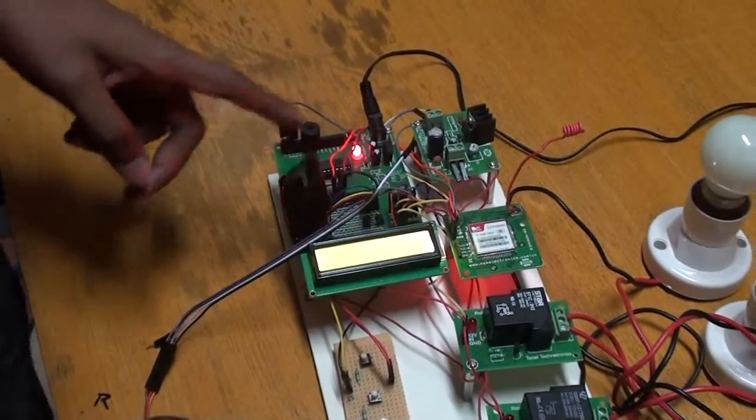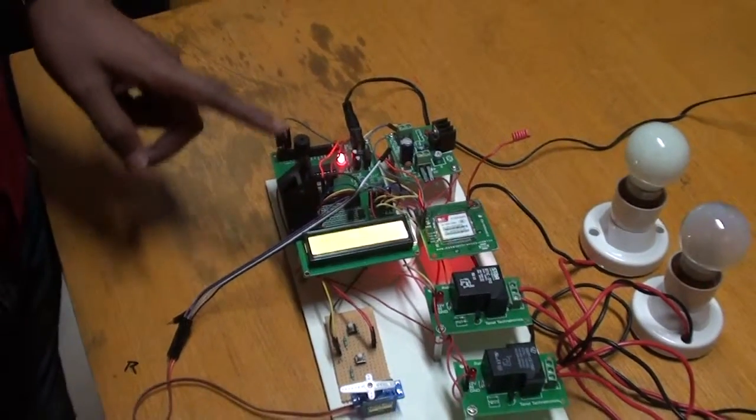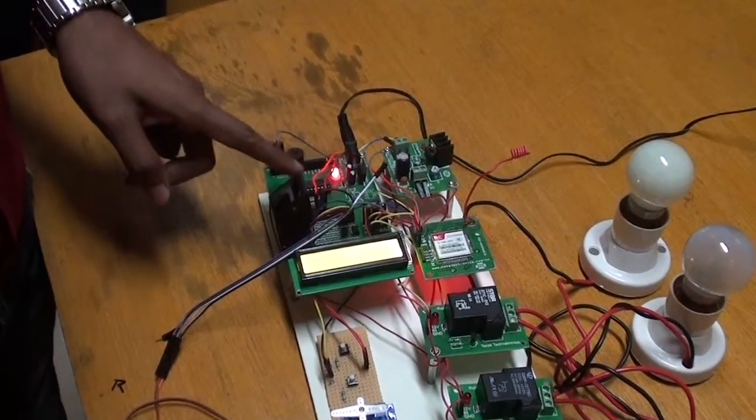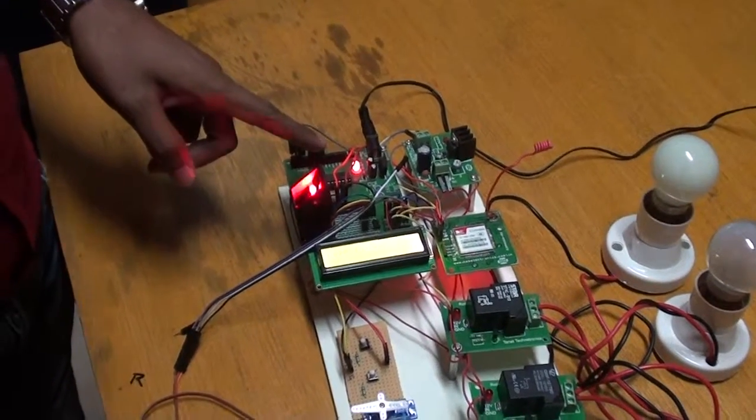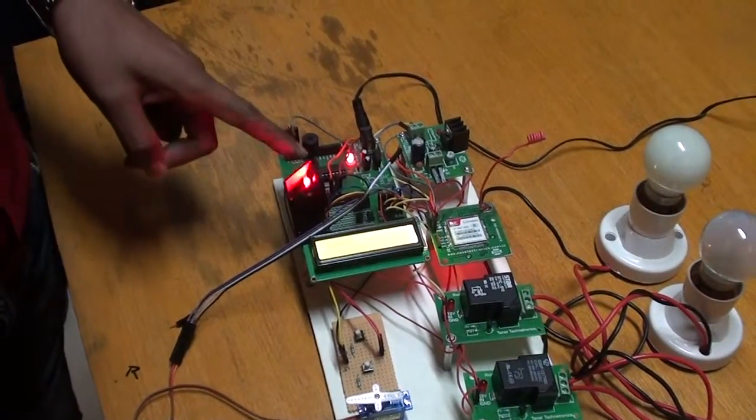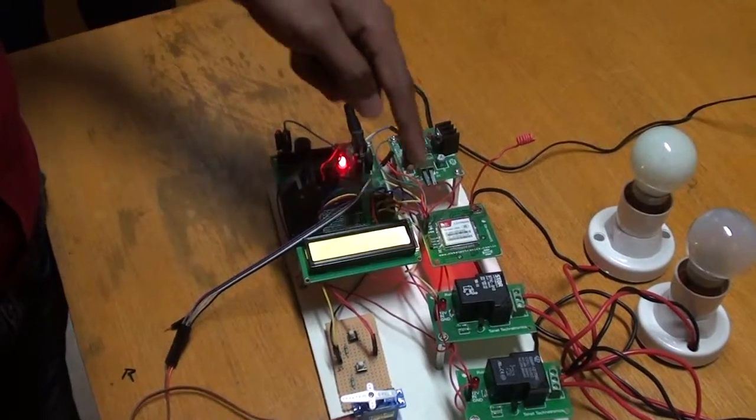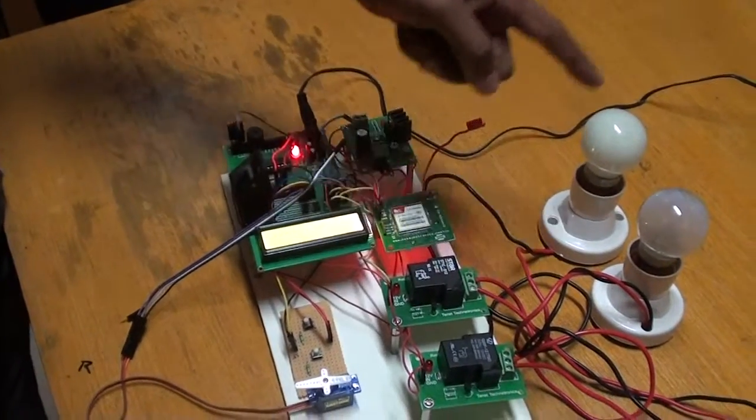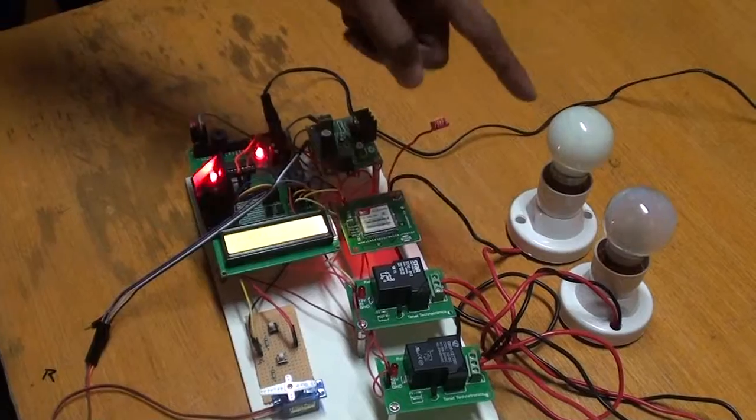Let's say a person has placed their finger. That fingerprint would be matched by the microcontroller. If the person is granted access, then the relay will be triggered and the bulb will glow.